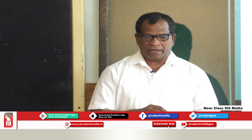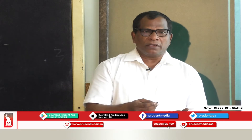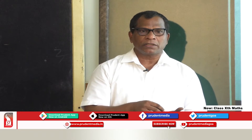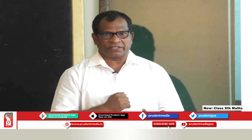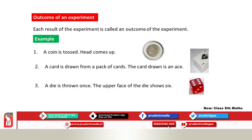What do you understand by an outcome of an experiment? If I toss this coin and it lands, it will show a result on its upper face — that is called an outcome. Each result of the experiment is called an outcome. For example: a coin is tossed and head comes up; a card is drawn and it is an ace; a die is thrown and the upper face shows six.